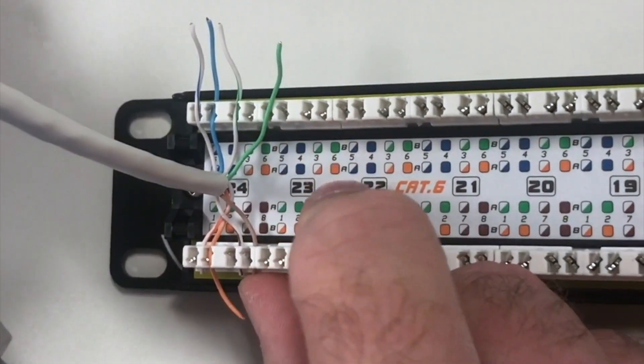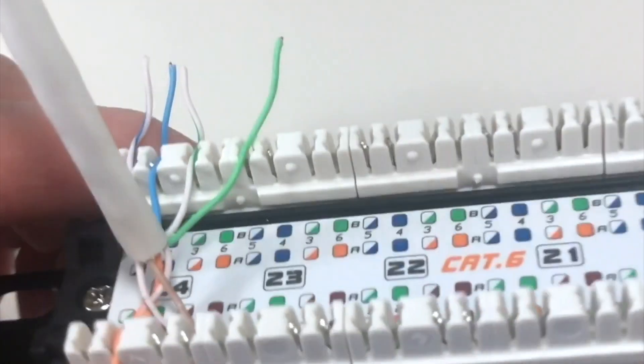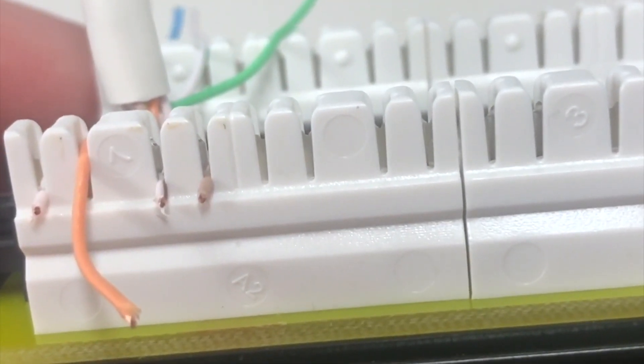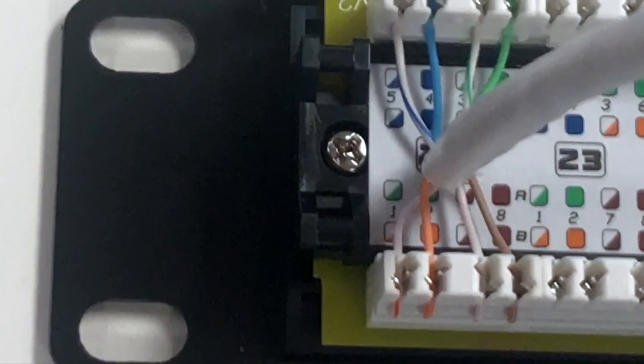A successful punch will clip excess wire and plastic from the strand and push the conductor into place. Here is what a finished punch-down will look like on a ProFit patch panel.